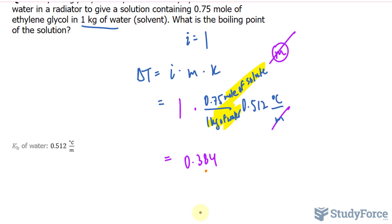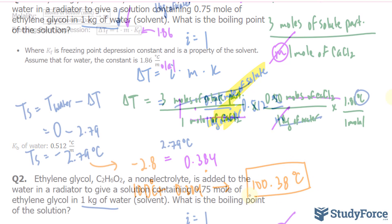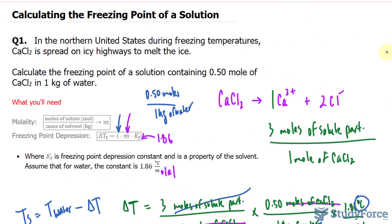Remember, the boiling point of water is 100 degrees Celsius. This raises the boiling point of water, so we'll take 100 degrees Celsius plus 0.384, and that gives us 100.38 degrees Celsius. And there you have it — that is how to calculate the freezing point and the boiling point of a solution.